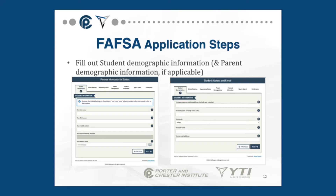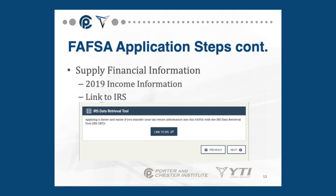This does not include the value of the home you live in, but would include any investment property. Then, once you log in, you will need to fill out all of your student demographic information such as address, telephone number and email address. If applicable, you will also need to fill in parent demographic information. A very convenient part of the application is that the FAFSA allows you to link to the IRS using the data retrieval tool in order to import your tax information directly into your FAFSA.